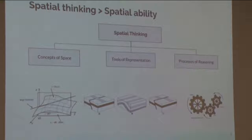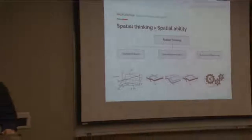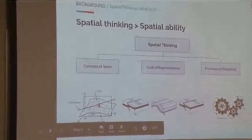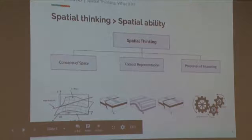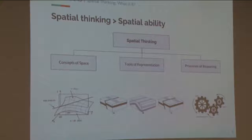Every STEM discipline also uses extensive tools of representation to depict and operate on spatial entities. On this slide we can see a 3D manifold surface, a couple of block strata diagrams from geology, and a series of interlocking gears — all representations of inherently spatial things. Other tools of representation include computer visualizations, agent-based simulations, and GIS maps. Representations like these are pervasive in STEM, and the further you get into a STEM discipline, the more specialized those representations become, to the point where an outsider may not be able to glean the same information as someone who has been practicing in the discipline.